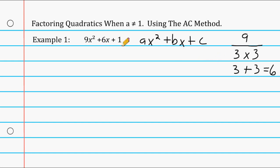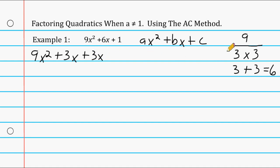Once we identify the two factors that produce this number and have a sum of the b term, we go to our original quadratic and rewrite the first term, 9x squared. Then we take each of the two factors — both positive 3s — and write plus 3x and plus 3x. Then we bring down the last term, which is 1. We make sure the two middle terms combine to give us 6x.